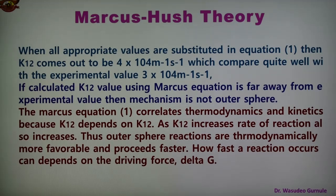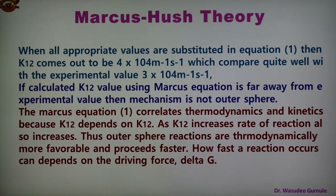As K12 increases, the rate of reaction also increases. So the rate of reaction increases with the increase in K12. In this way, outer sphere reactions are thermodynamically more favorable and take place faster as compared to other reactions. The rate of reaction depends on the driving force, that is free energy ΔG. Therefore equation 1 is a simplified Marcus equation.